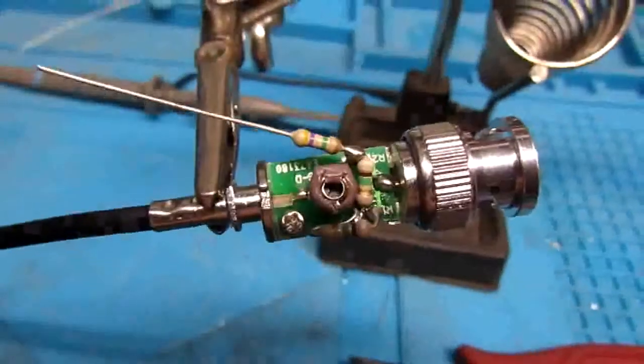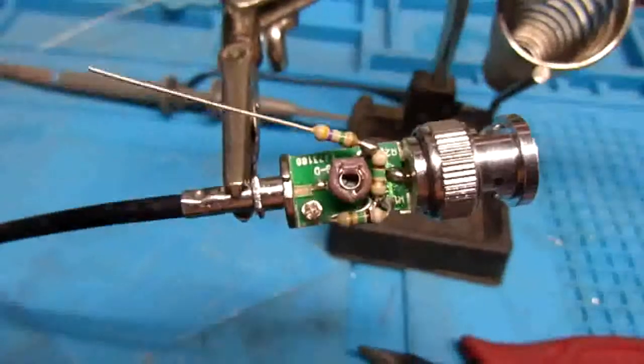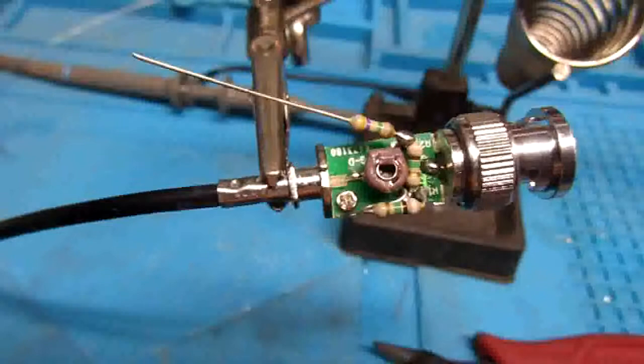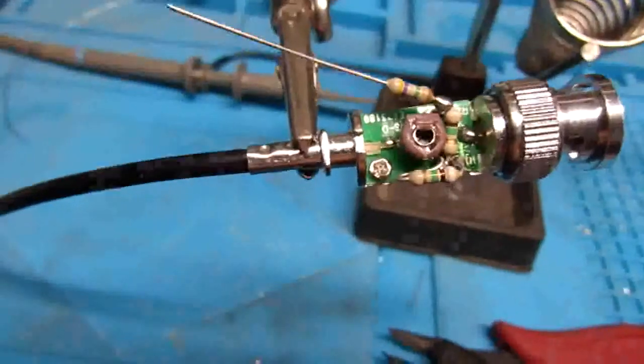And the third resistor we're going to solder to the other end over here to make our DC lead. Okay, there's the third resistor soldered into place.